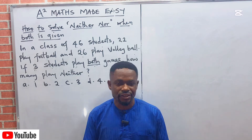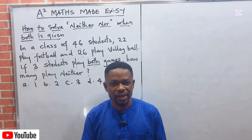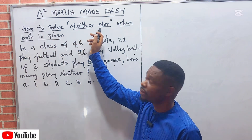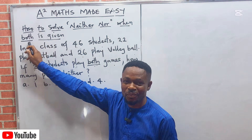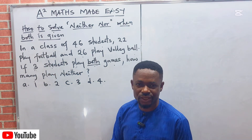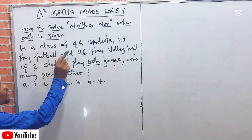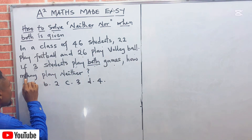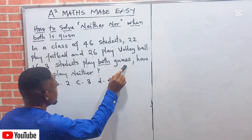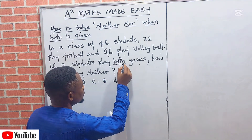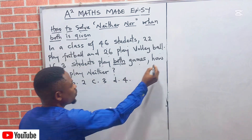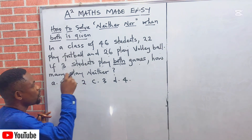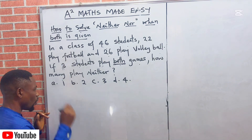Alright viewers, this is square mass made easy. We are going to be considering another dimension on Venn diagrams. This particular Venn diagram we talk about is how to solve for 'neither' when 'both' is given. This time around, they will give you 'both' and ask you what 'neither' is. Looking at this question: in a class of 46 students, 22 play football and 26 play volleyball.